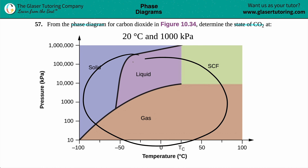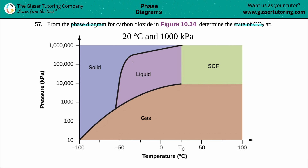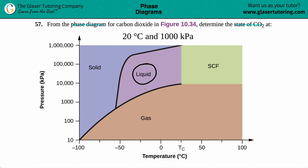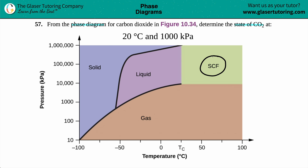These phase diagrams are pretty easy to understand. For carbon dioxide there are four different states: the solid phase shown in deep purple, the lavender liquid phase, the brown gas phase, and the supercritical fluid up here.